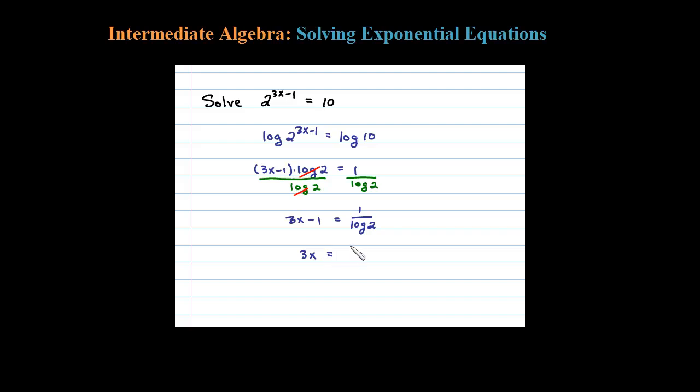us 3x equals 1 over log of 2 plus 1. And then finally, dividing both sides by 3. Let's be a little careful with that. We have then x equals, and that's what we want, isolate the x. When